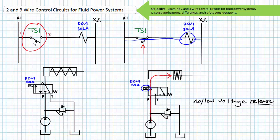Consider the safety repercussions of two wire control circuits. If you are a technician tasked with the investigation of this exhaust vent's failure to open, the cylinder would extend the moment you fix the problem. It is for this reason lockout and tagout procedures exist.